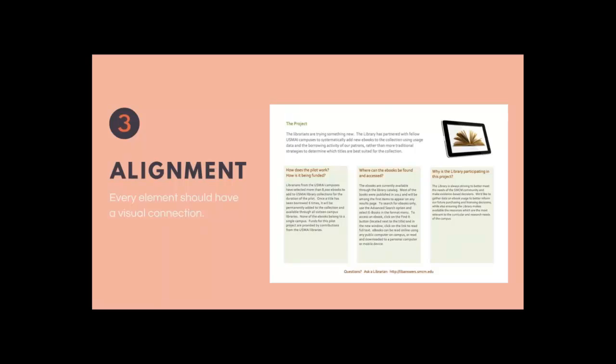Alignment is important in any design. Every element you include should have a visual connection to one another — items shouldn't be placed at random on a page or screen. Think about every element you're creating as being part of a grid. Design software like Publisher or Photoshop can set up a grid so you can snap items to it. Good alignment helps you organize and unify your design and makes it easier to get your message across. This e-book design has obvious alignment — three columns, with some things spanning those columns, very well organized.